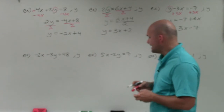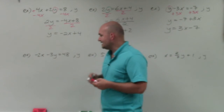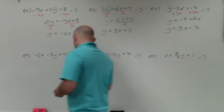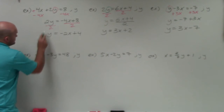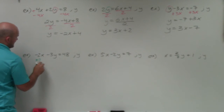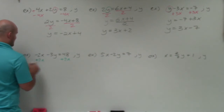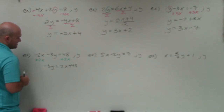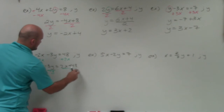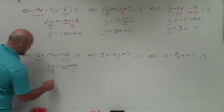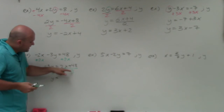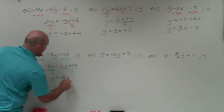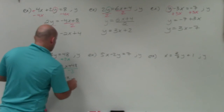Here, y is being multiplied by negative 3 and being subtracted by negative 2x. Using inverse operations, since that's a negative, I'm going to add 2x to both sides. That leaves negative 3y equals 2x plus 48. My y is being multiplied by negative 3, so I'll divide by negative 3 on both sides. Negative 3 doesn't divide into 2, so I leave it as a fraction: negative 2/3 x. Negative 3 does go into 48, giving negative 16. So y equals negative 2/3 x minus 16.